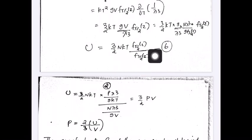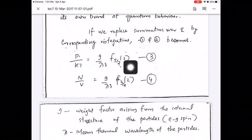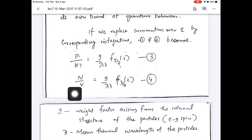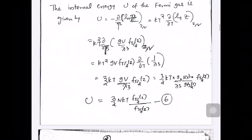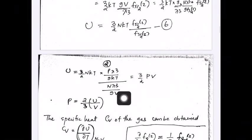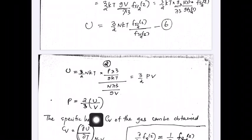Now, writing f_{5/2}(z) = Pλ³/gkT and f_{3/2}(z) = nλ³/gV from equations 3 and 4, and substituting into U = (3/2)NkT · f_{5/2}(z)/f_{3/2}(z), several terms cancel — the λ³ and g factors appear in both numerator and denominator — and you finally get U = (3/2)PV, which means pressure equals (2/3) of the energy density. For the ideal Bose gas also, we had obtained this same expression: pressure equals (2/3) of the energy density.